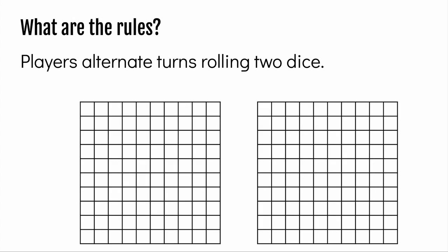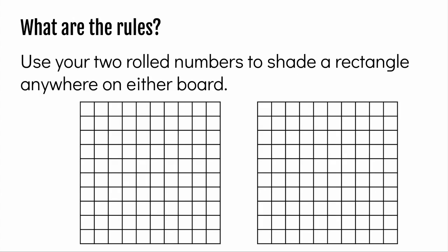Players alternate turns rolling two dice. The rolling player then uses the two numbers to shade a rectangle anywhere on either game board with those dimensions.